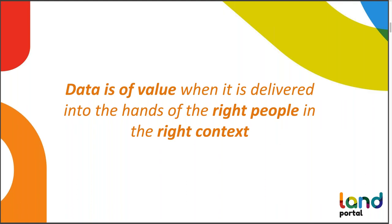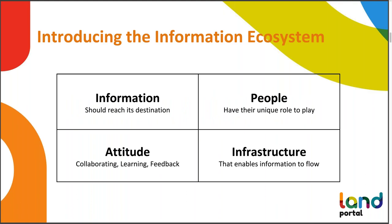We believe data has value when it is delivered to the right people in the right context. Raw data such as satellite images might mean very little to a local farmer but can be analyzed by specialists to draw conclusions like land cover changes or identify community settlements. Advocacy institutions need data in the form of powerful stories to raise issues on the political agenda. Sometimes data should reach farmers and slum dwellers so they have the right information to empower themselves against land grabbing. This environment where everybody builds on and adds to data and makes sure it reaches the right people and context is what we call the information ecosystem.